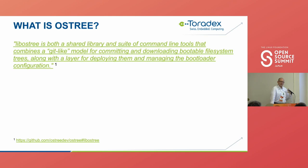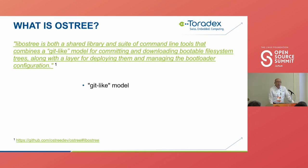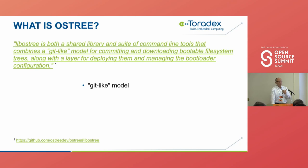So what is OSTree? OSTree is an infrastructure piece of code used in Torizon and in a number of other similar systems. It uses a Git-like model. If you're familiar with how Git stores source control information using a content-addressable file store, OSTree does a very similar thing. Each file is essentially associated with a name corresponding to its hash, so if you try to upload that same exact file again, the system can easily detect it's the same content and doesn't need to deploy that object again.